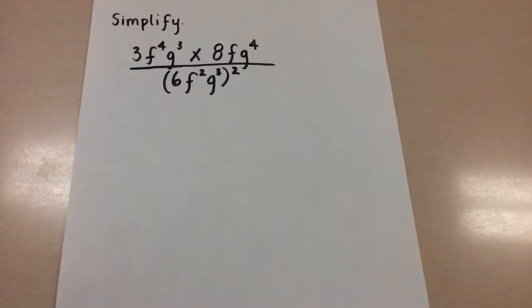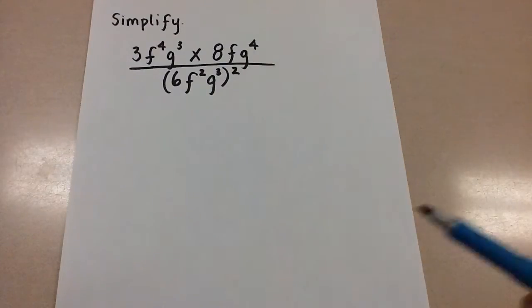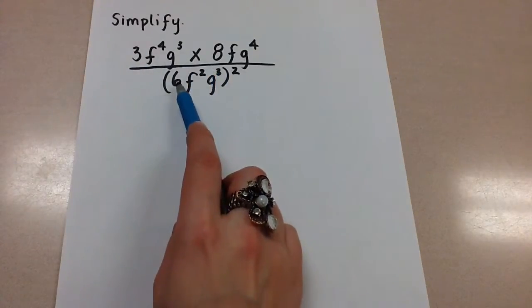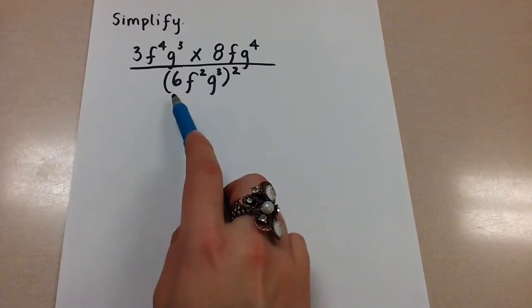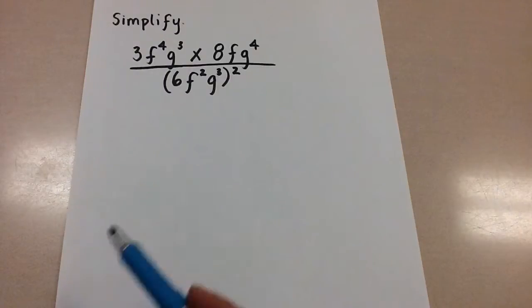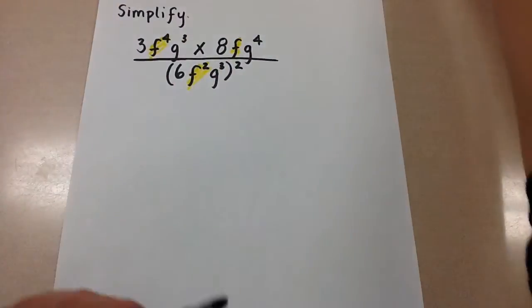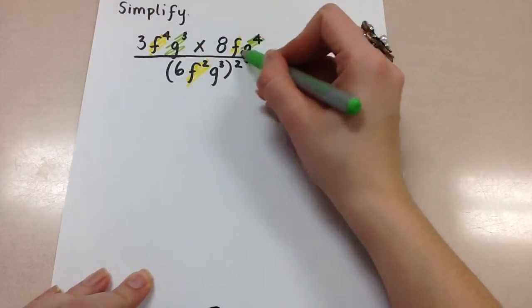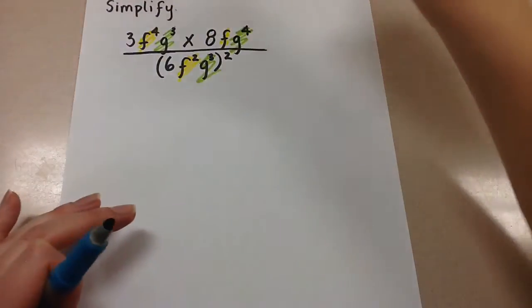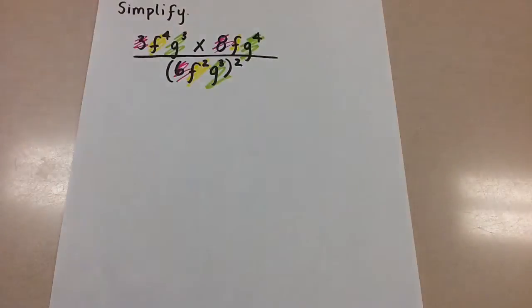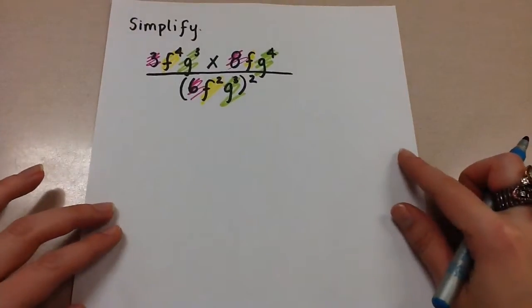What we have to remember when using the exponent laws is that we can only combine variables together if the bases are the same. When I look at this expression, I have the 3, which is a coefficient, and an 8, and then this 6 inside the set of brackets. All the numbers can be combined as usual, and then the variables — the F's will be combined, the G's will combine, and the numbers can be combined. We have to make sure the bases are the same before we can use the exponent laws.